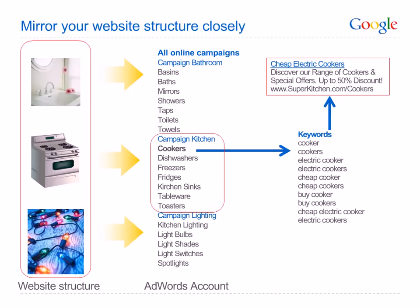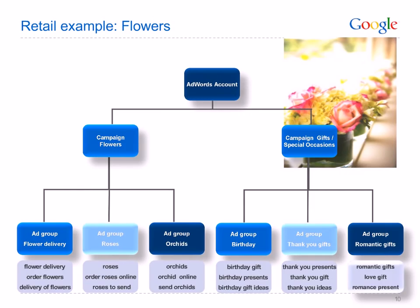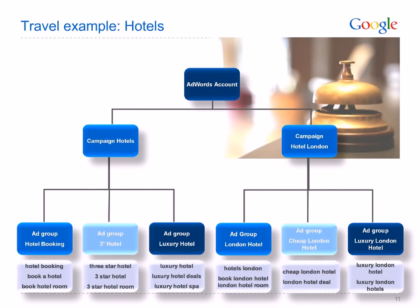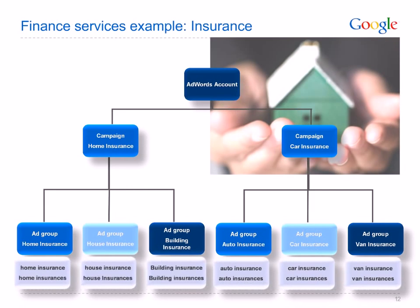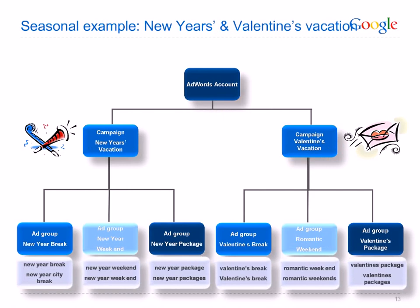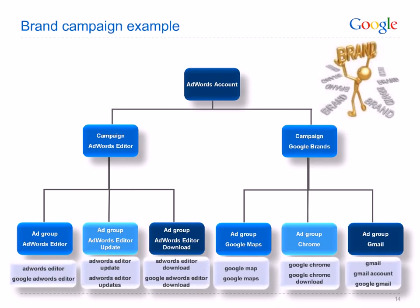In the next slides, you'll find campaign structures for retail, travel, finance, seasonality and brands. You can skip through these examples and look at the ones you're interested in. Here we have an example of a retail client using flowers, then travel and hotels, financial services with insurance as the example, a seasonal example with New Year's and Valentine's Day, and lastly a brand campaign.